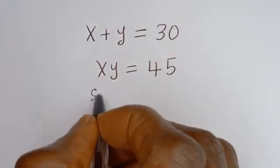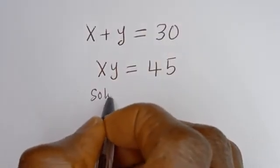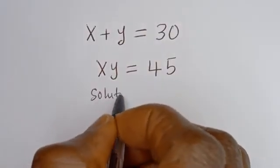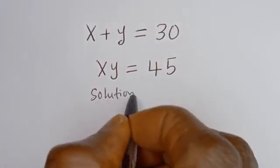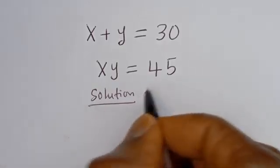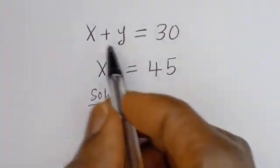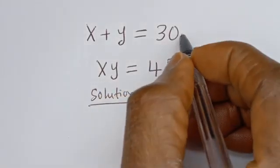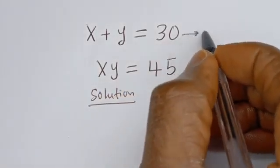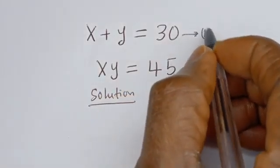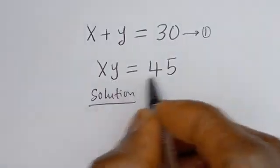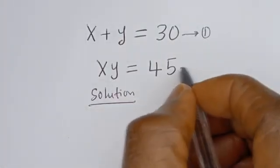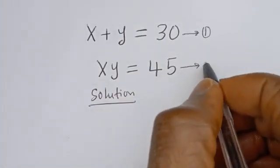Solution. x plus y is equal to 30 — let's call this equation 1. x times y is equal to 45 — let's call this equation 2.